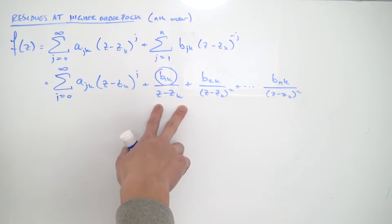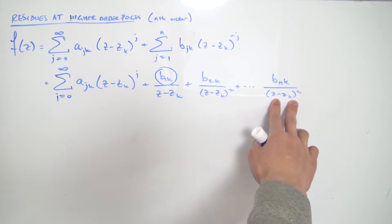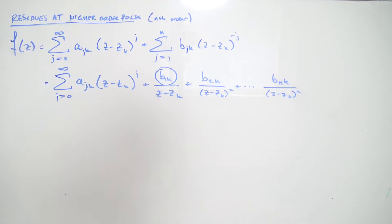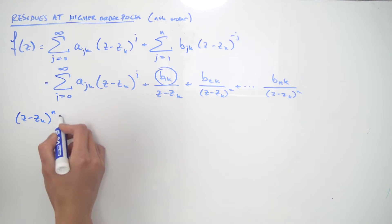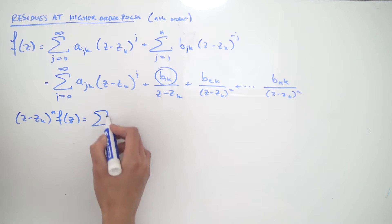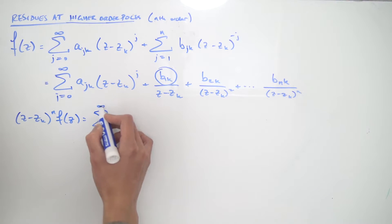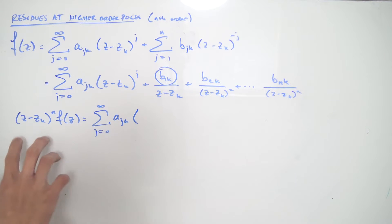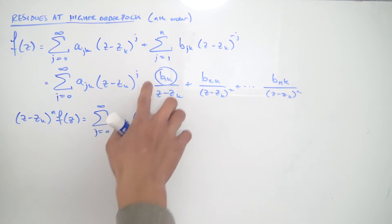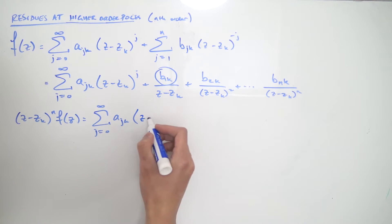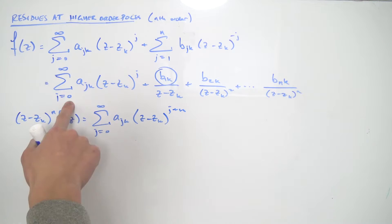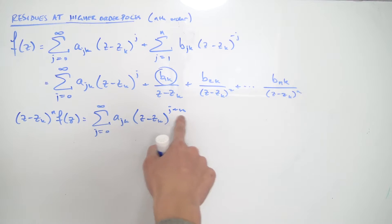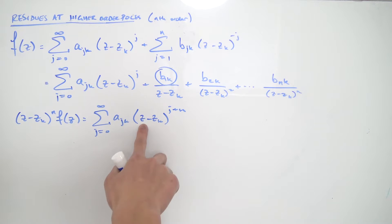Instead of multiplying by (z - z_k), we multiply everything by (z - z_k)^n — the highest power. If we do that, we find that (z - z_k)^n times f(z) equals the sum from j equals 0 to infinity of a_sub_jk times (z - z_k)^(j+n). Since n and j are always positive, j plus n is always positive, so plugging in z_k won't divide anything by zero.